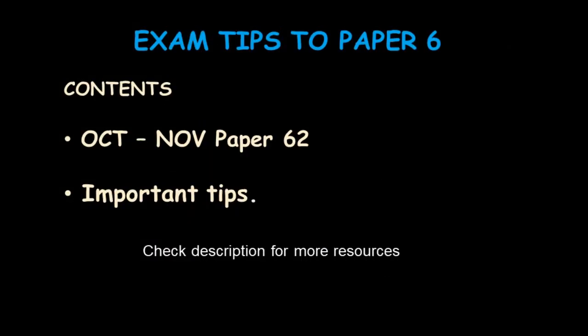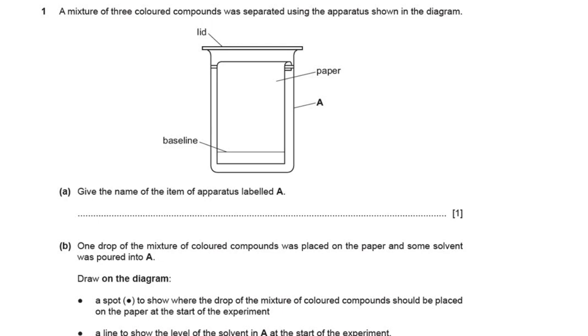In this video we will solve IGCSE Chemistry Paper 6-2 of the October/November series. The component code is 0620. Along with solving the paper, we will also see what are the important tips to solve Paper 6 in general. Let's start with question 1, and along with solving the paper we'll keep on seeing the important points to be taken care of.